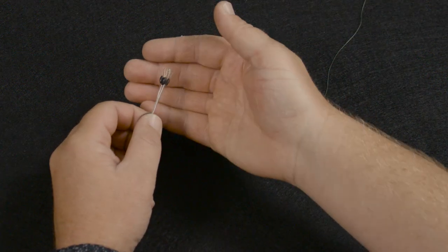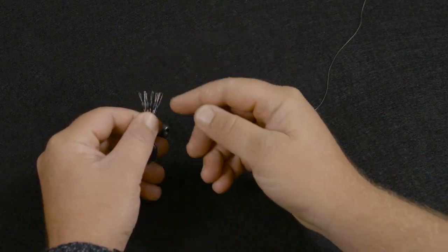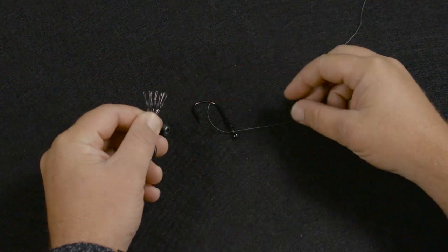So what we're going to do - the bobber stops come in this cluster here. They've got all these wires with these little loops at the end of the wires.